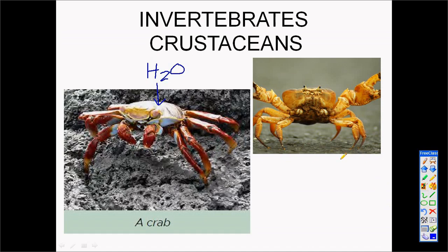Crabs lay eggs, so they are oviparous. They lay eggs and the baby crabs always look like the mother. That's about it for crabs.